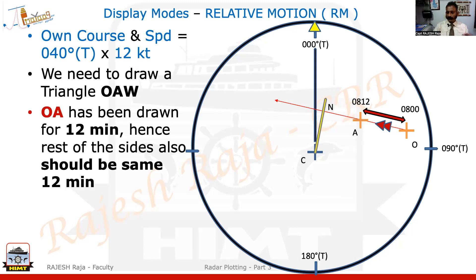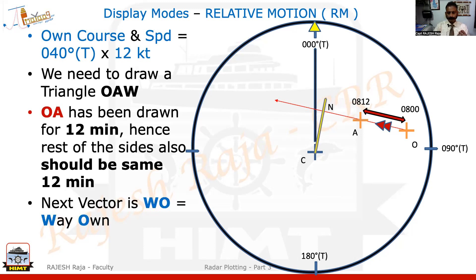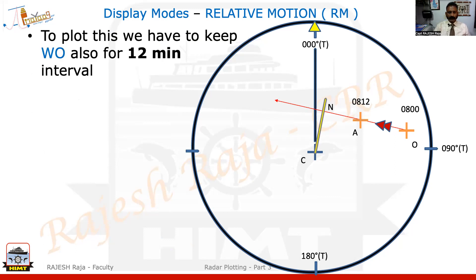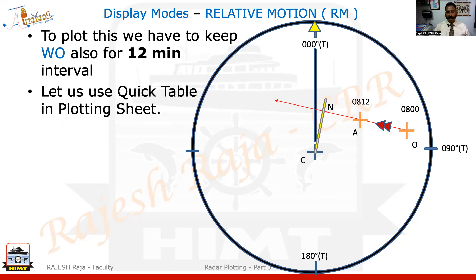This is what we have already done. We have done OA, which we can measure from scale number four, which we used at the start. My next vector is WO. A simple way to remember: WO can be called 'way-own,' meaning it is my own course and speed. To plot this, WO should also be for 12 minutes — so the vector length I am going to use will be for 12 minutes at a speed of 12 knots, which is my own speed.